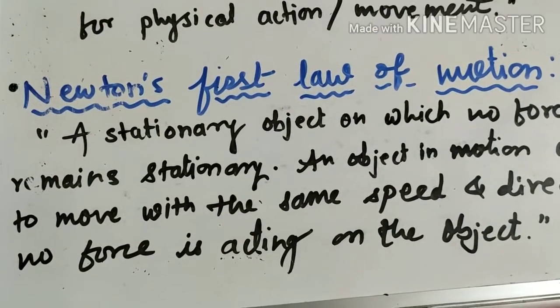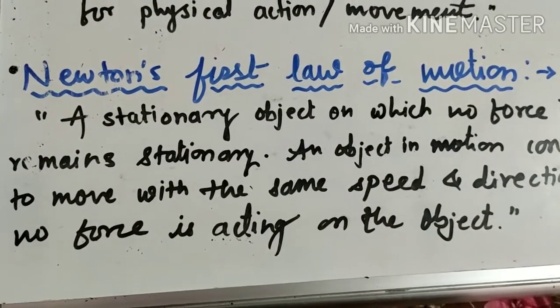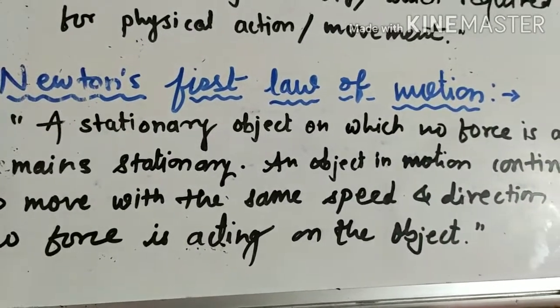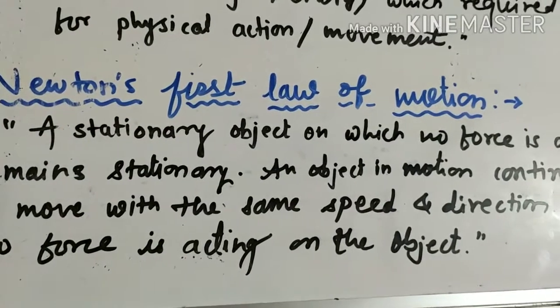So when any object is stationary, a stationary object on which no force is acting, it remains stationary. This is the first sentence. Now what is the second sentence?